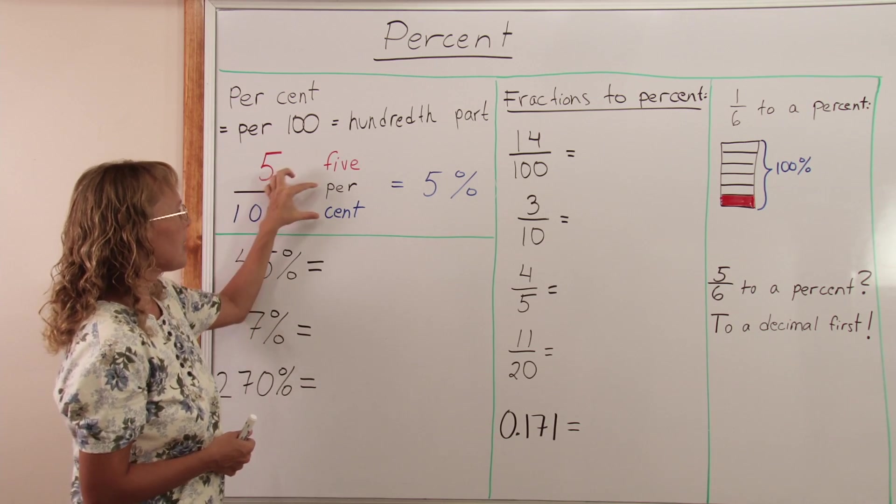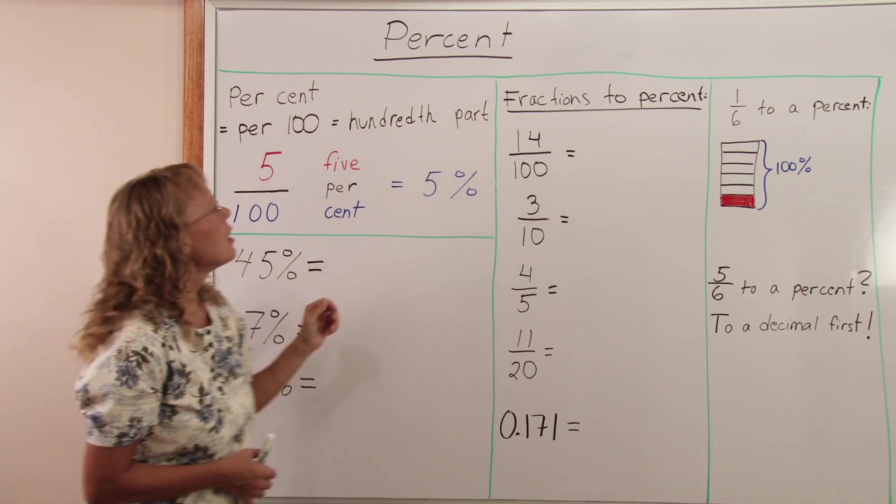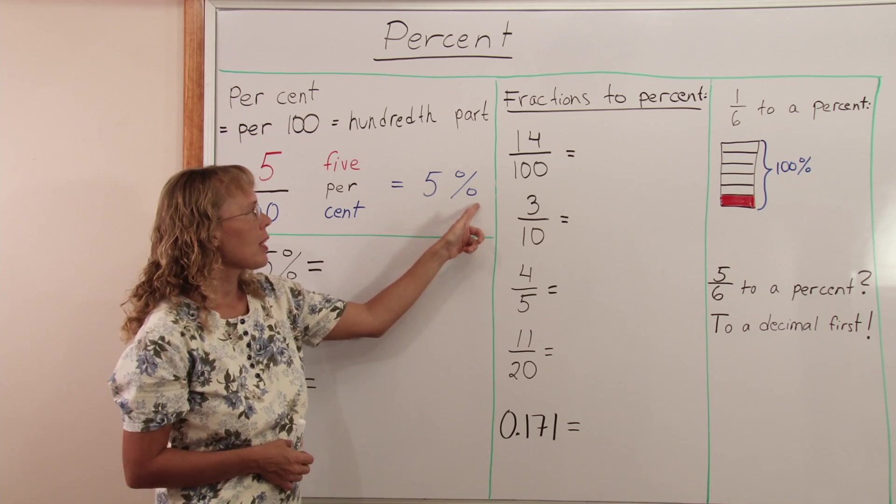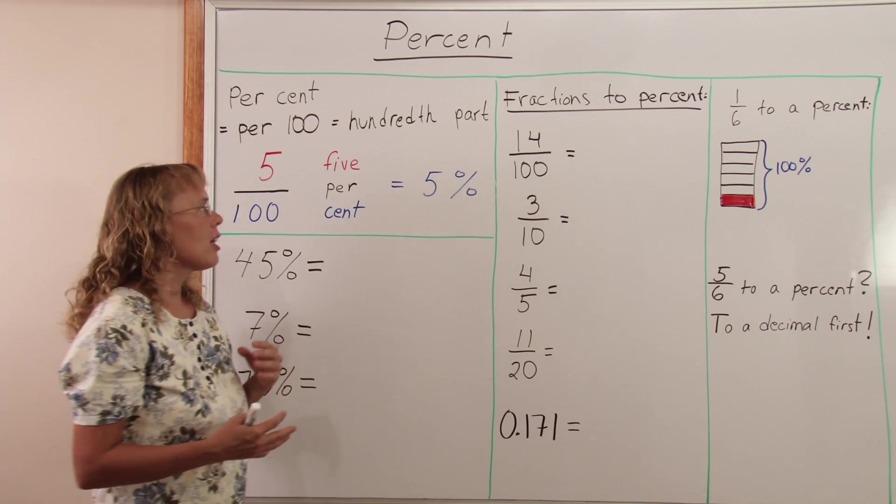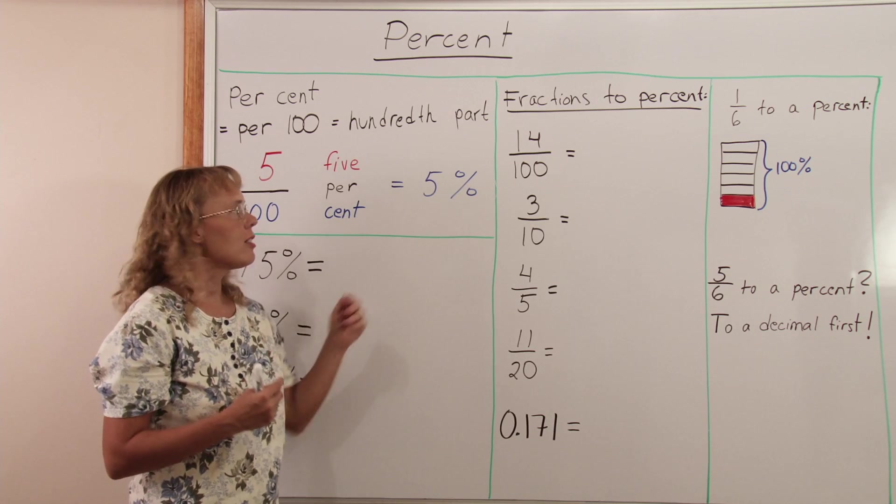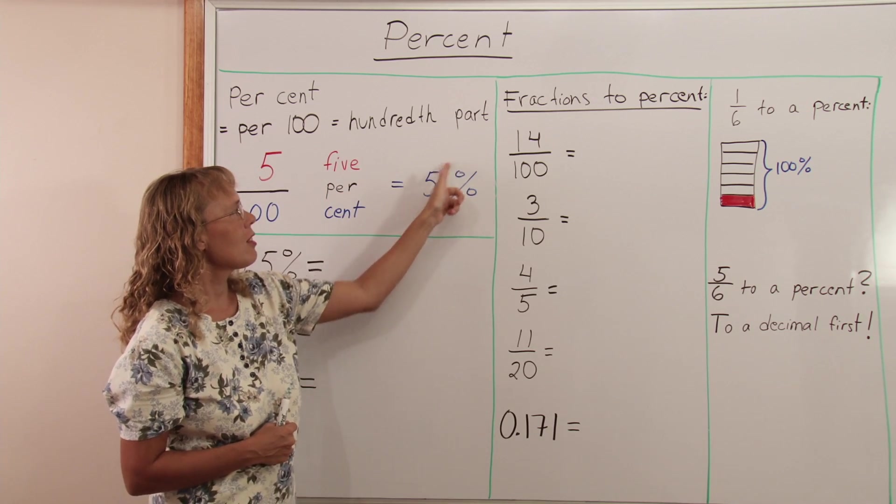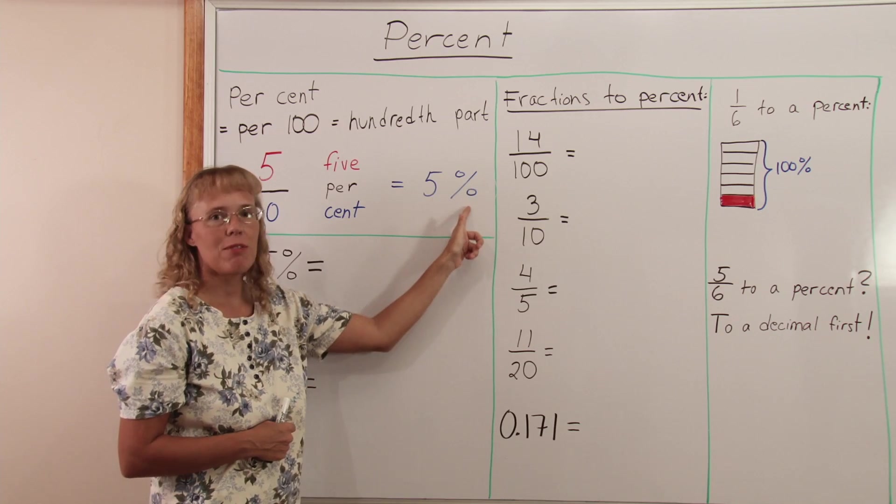This percent, which can be written with or without the space, is this symbol here. The symbol actually evolved from the per and the hundred. The p is this top circle here and then this bottom circle came from the hundred.